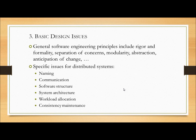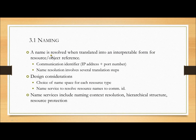What are the design issues to call a system a distributed system? The characteristics are naming, communication, software structure, system architecture, workload and location, and consistency maintenance. Coming to naming: a name can be defined as a translated form of a resource or object reference when it is interpreted. It uses a communication ID, which is a combination of IP address and port number. Name resolution involves several translation steps.